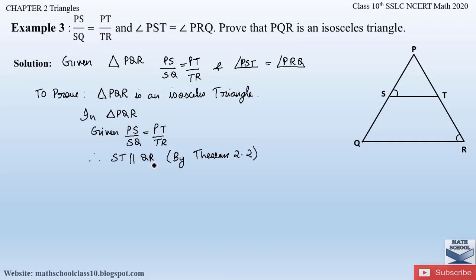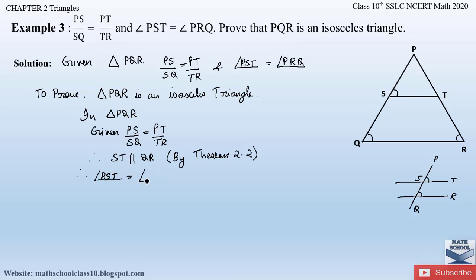Since ST is parallel to QR, we can apply the property of parallel lines: if two lines are parallel and a transversal crosses them, the corresponding angles are equal. Here ST and QR are the two parallel lines, and PQ is the transversal. Therefore, the corresponding angles PST and PQR are equal. So, angle PST is equal to angle PQR — let this be equation 1.